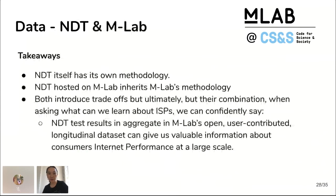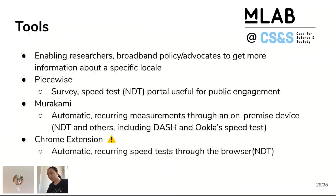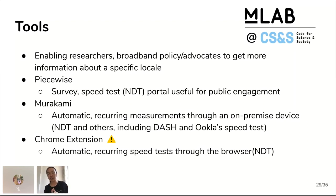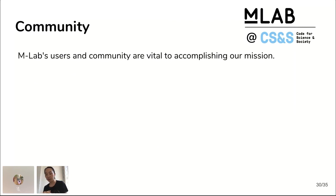We also engage with our community through open source tools that allow drilling down more geographically. By default we only go down to the IP level, which is about county. Some researchers want to drill down further — for example, what households are able to access the internet in a certain way. We have a suite of tools designed to provide that information in a privacy-sensitive way. These tools are designed to say: here's the public data set, here's how you can get more information about your specific location.